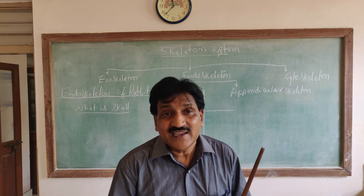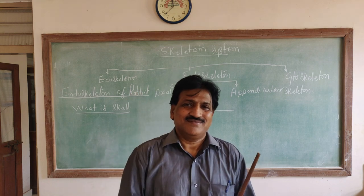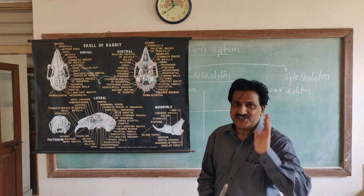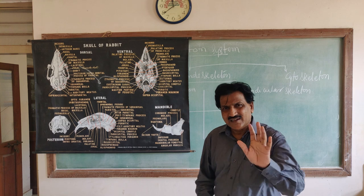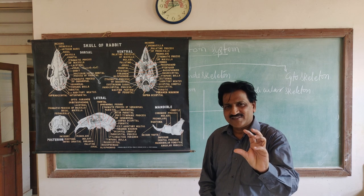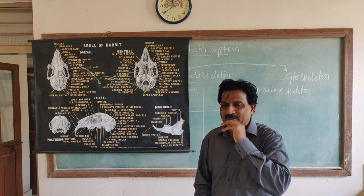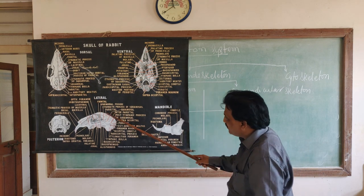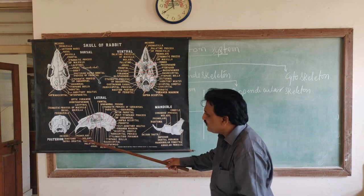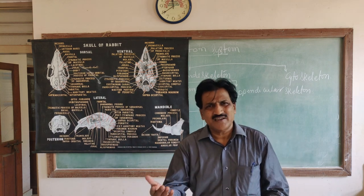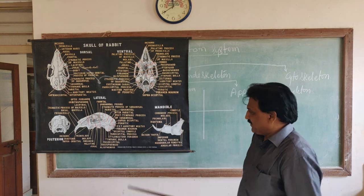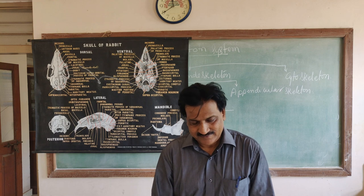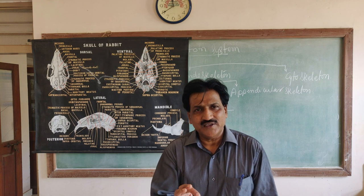Now I will explain the cranial part of the skull. The skull has two parts: the cranium part and the facial part. The cranial part encloses the brain and the facial part maintains the shape of the face.